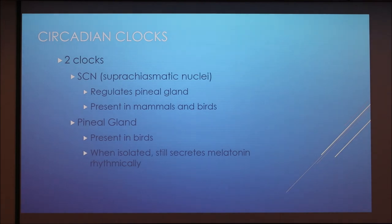Like mammals, birds have a circadian clock to keep track of their circadian rhythm. However, unlike mammals, birds have two clocks present. The first clock, located in the suprachiasmatic nuclei, regulates the pineal gland and is present in both birds and mammals. The second clock, which is not found in mammals, is located in the pineal gland. This is unique because it allows the pineal gland to still secrete melatonin rhythmically under a light-dark cycle even when it is isolated from its neural inputs.